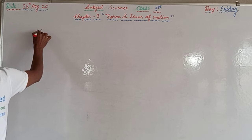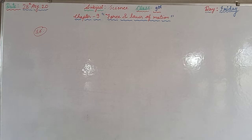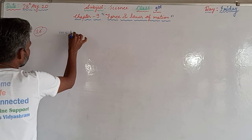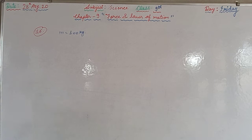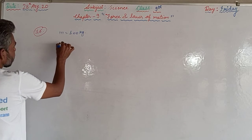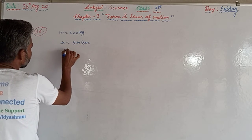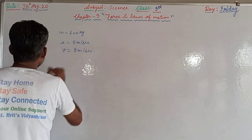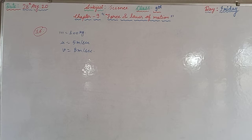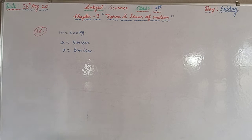Question number 16 is on page number 129. In this question, an object of mass 100 kilograms is accelerated uniformly from a velocity of 5 meters per second to 8 meters per second. So initial velocity u = 5 m/s and final velocity v = 8 m/s. We need to calculate the initial and final momentum, and the magnitude of the force exerted on the object. It is also given that the object is accelerated uniformly in 6 seconds, so time t = 6 seconds.